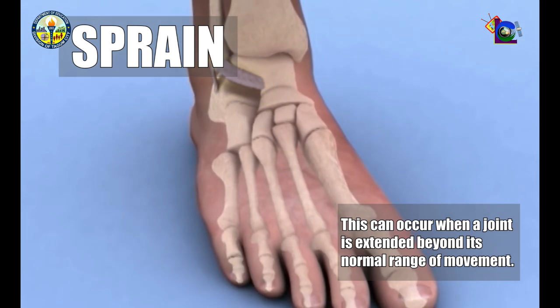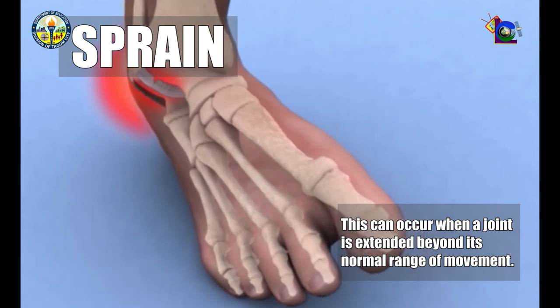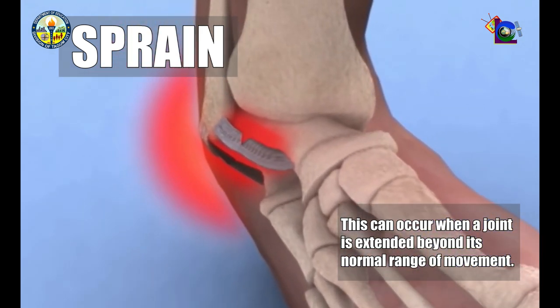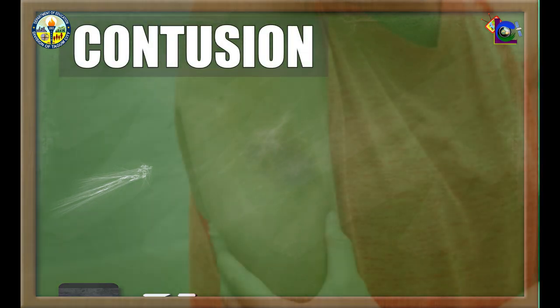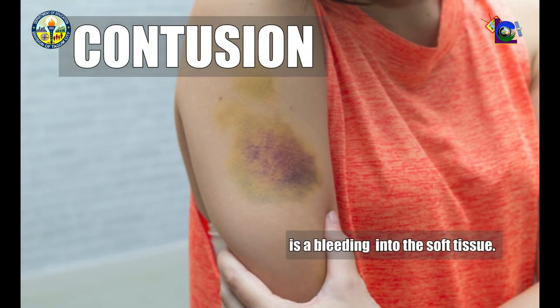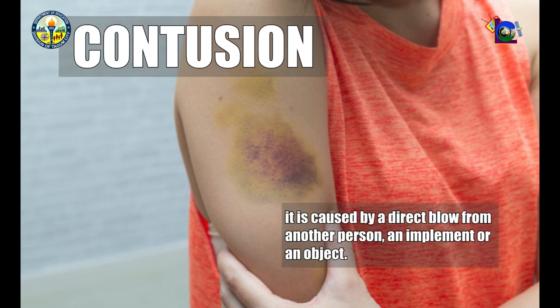Sprains can occur when a joint is extended beyond its normal range of movement. Second is contusion, or bruise. Contusion is a bleeding into the soft tissue. It is caused by a direct blow from another person, an implement, or an object.